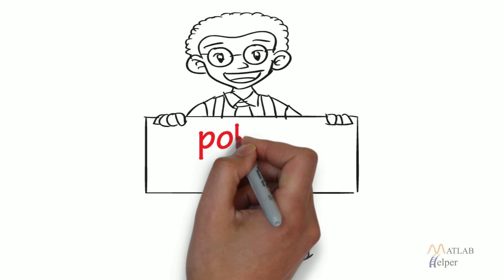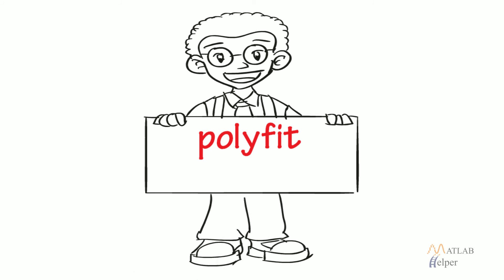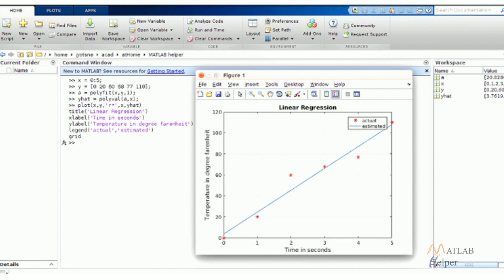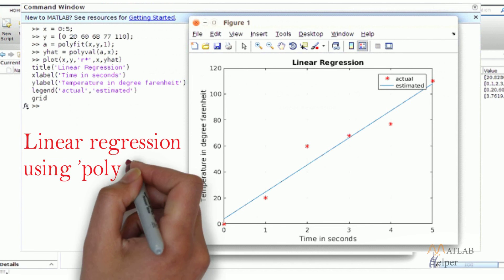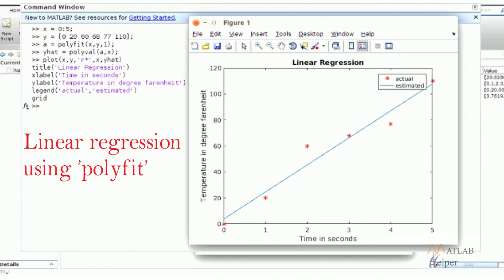In MATLAB, we can use the function polyfit to draw a curve of desired degree. The usage of this function is shown in the figure, where we are fitting a polynomial of degree 1 which best fits our set of points. This is equivalent to performing linear regression.